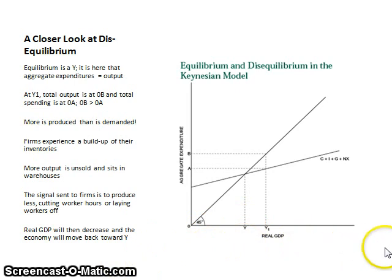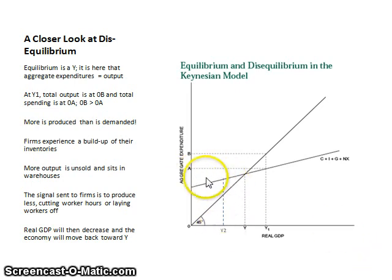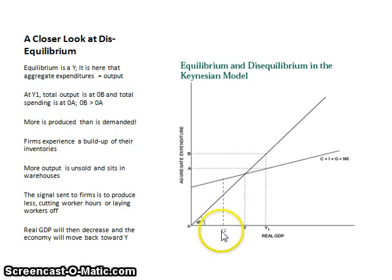Now, see if you can tell me what would occur at Y2. You should pause the video to think about it. The answer is that the nation is spending more than it's actually producing, creating a state of dis-savings. Firms receive signals that inventories are being depleted very fast, so they try to bump up employment and increase output, and the economy would move from Y2 back to equilibrium at level Y.